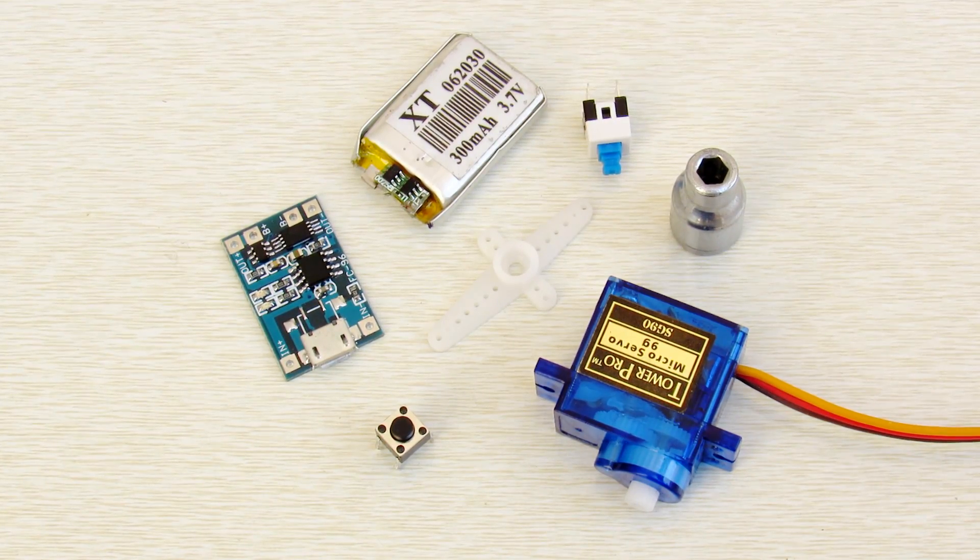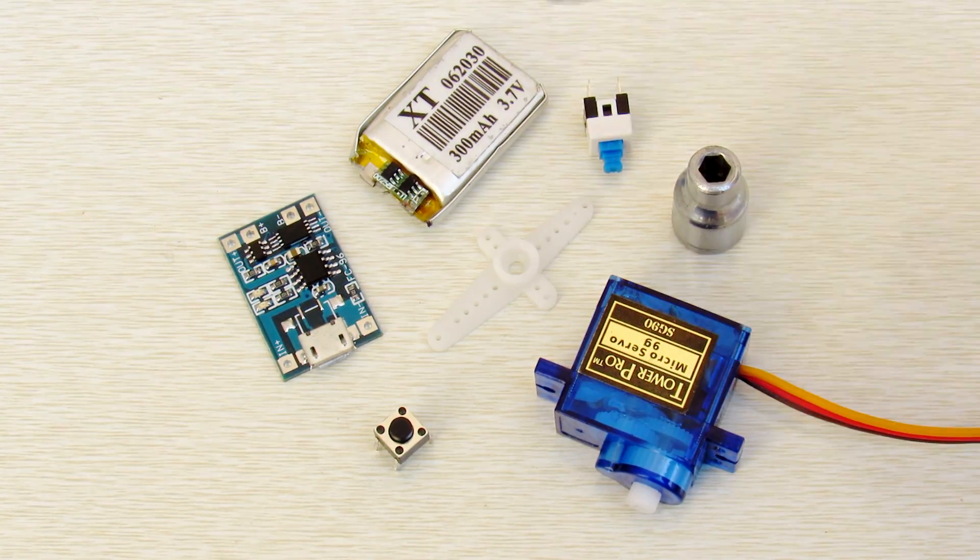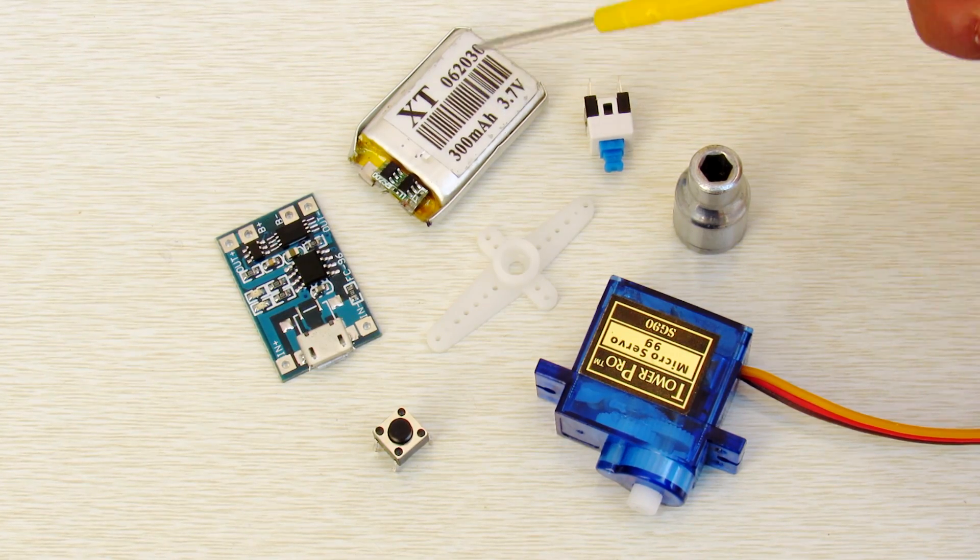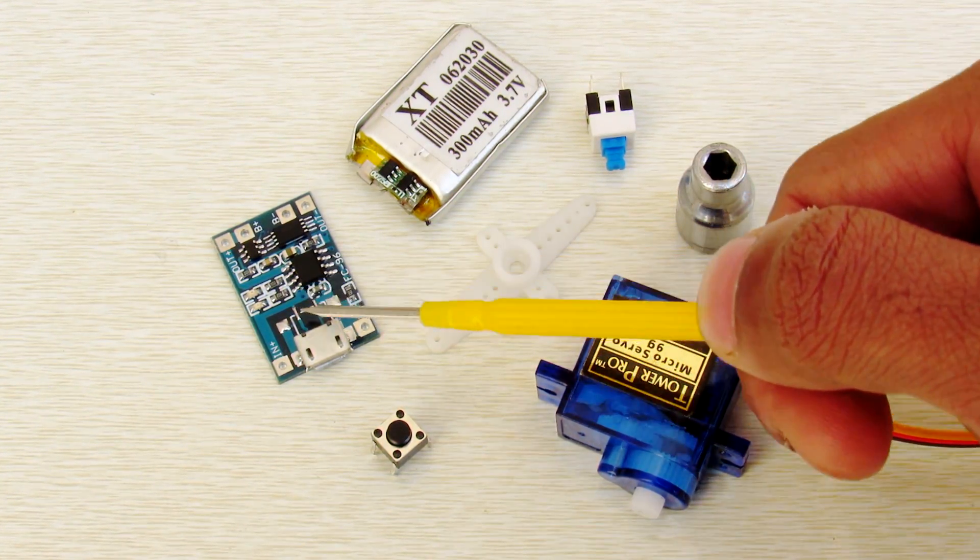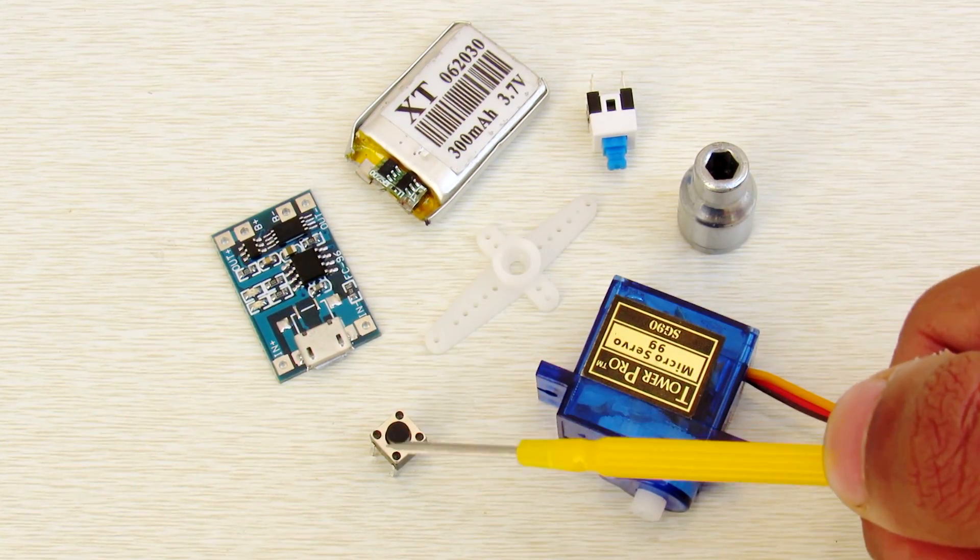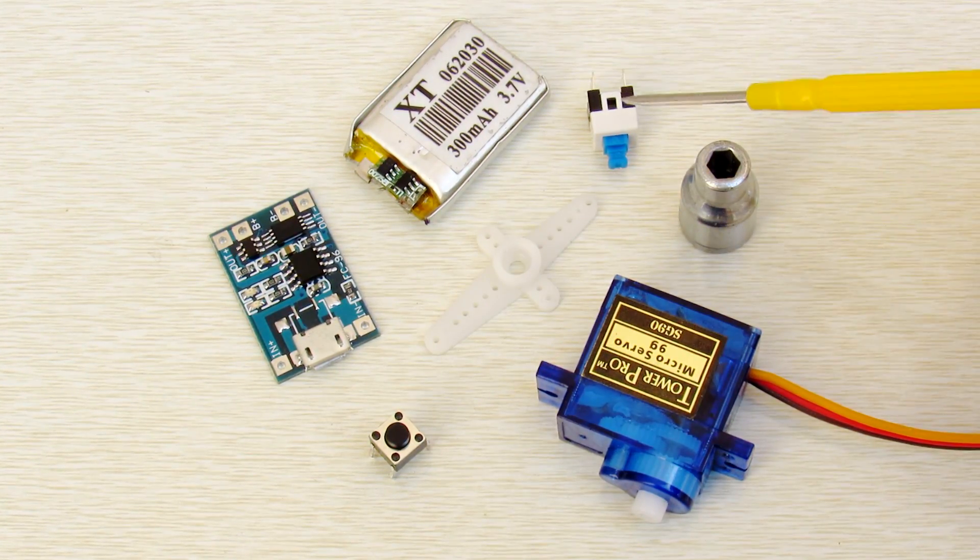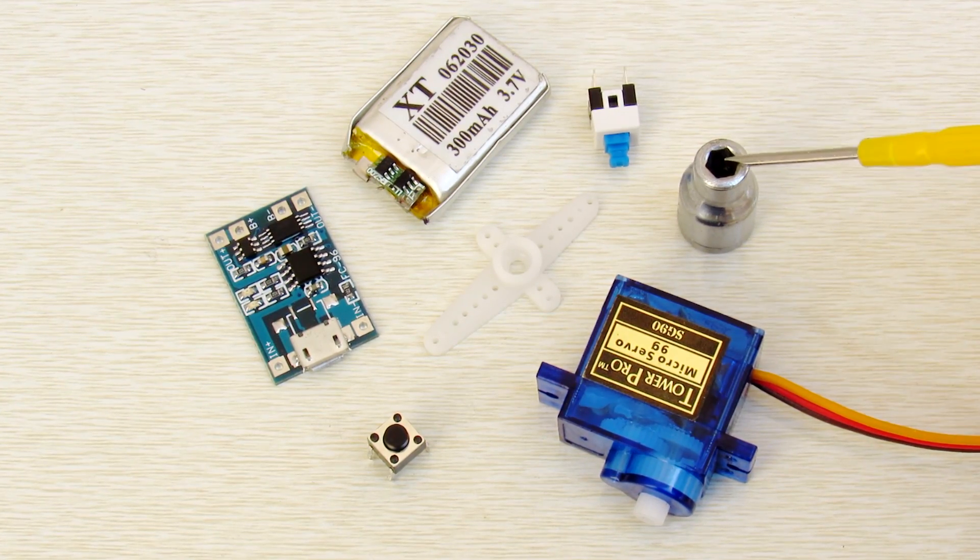Here's what you need: a 9G micro servo motor, a 3.7 volt lipo battery, a battery charger TP4056 to be exact, a tactile push button, and a double pole double throw switch. This total cost is $6.